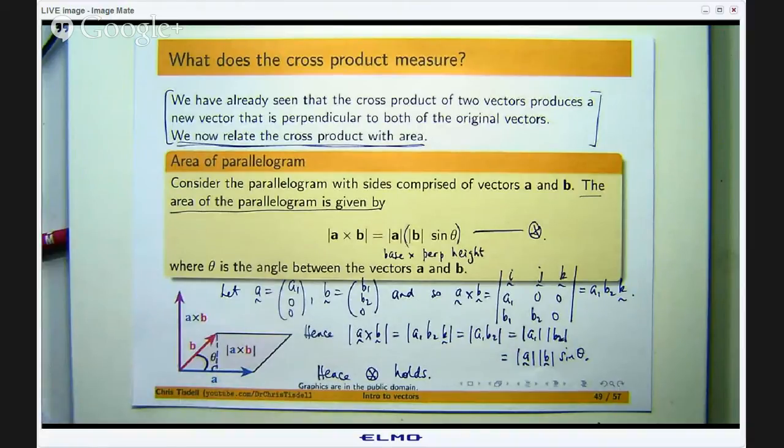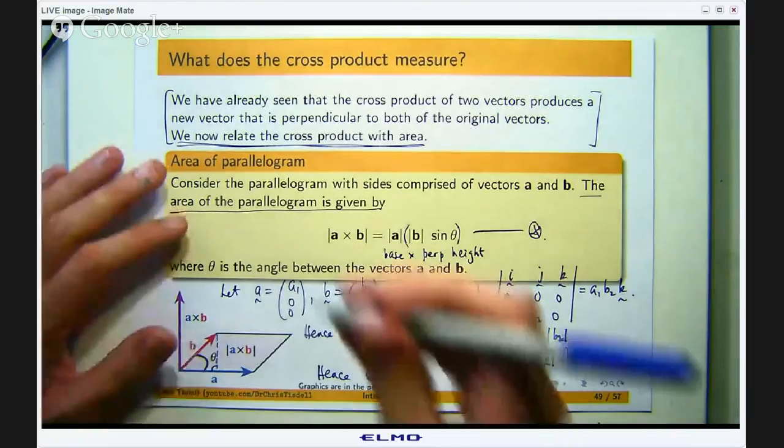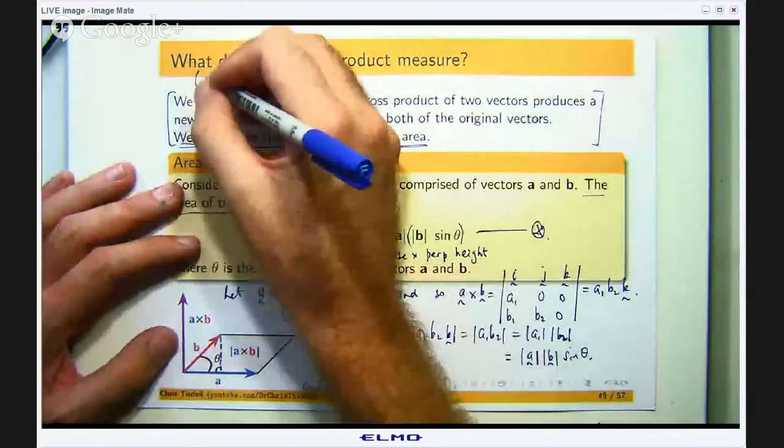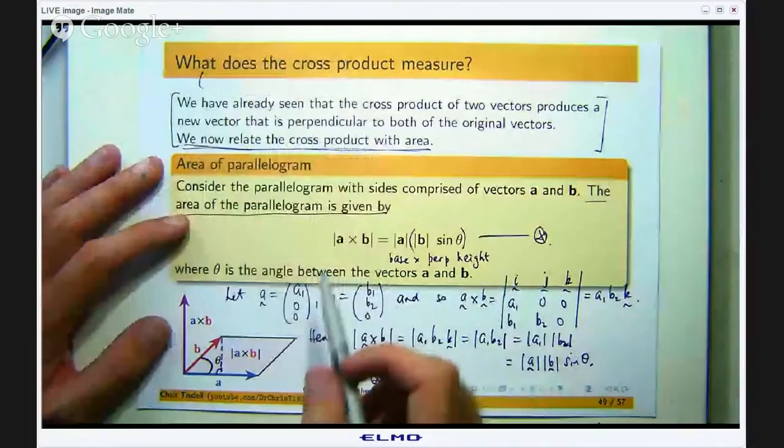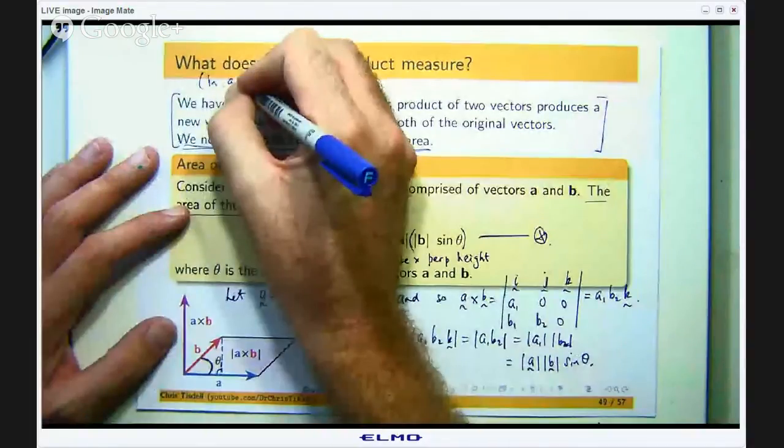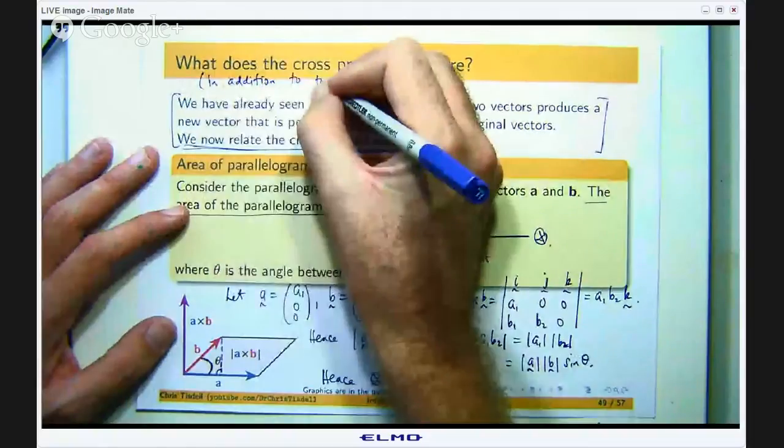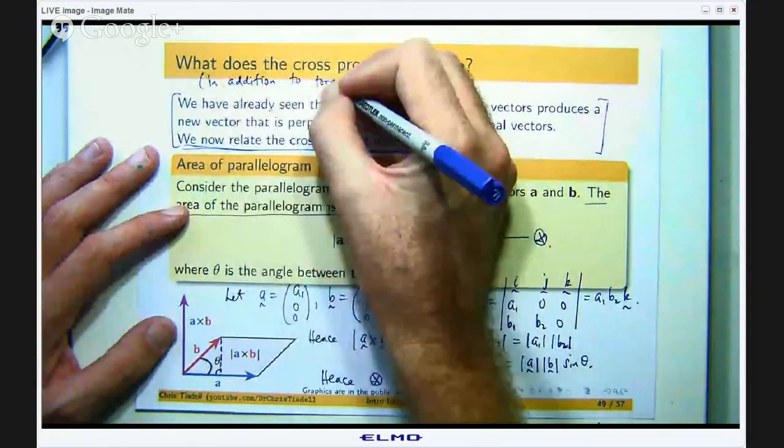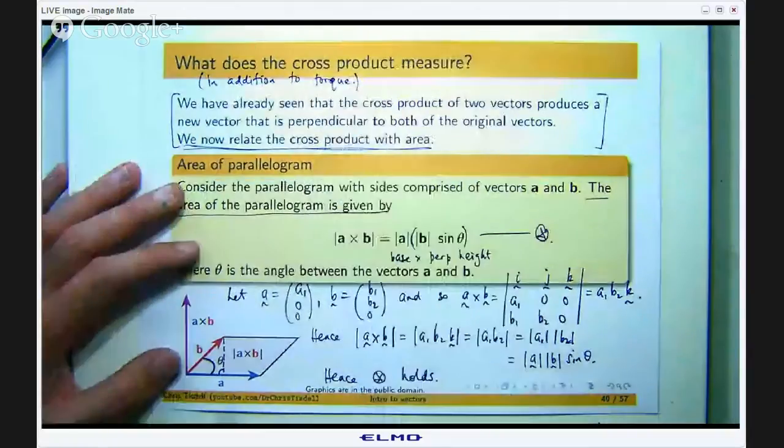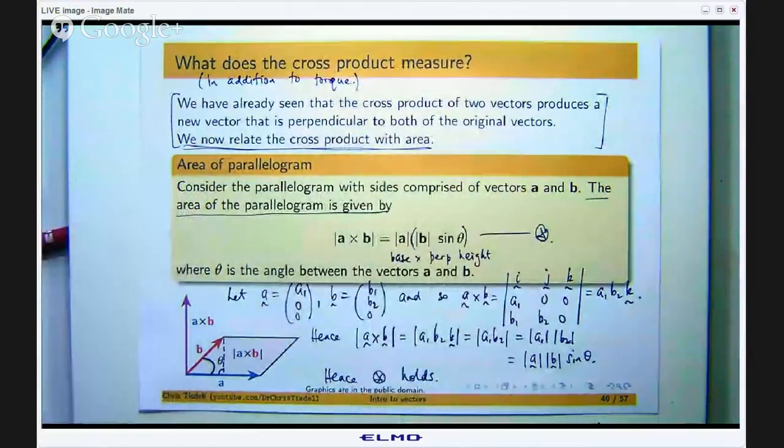Okay, so that is a geometric explanation of what the cross product measures and we already know that from a previous video that the cross product measures torque but the length of the cross product can measure area. Okay, so that is a basic proof involving the magnitude or the length of the cross product and relating it to area of a parallelogram.